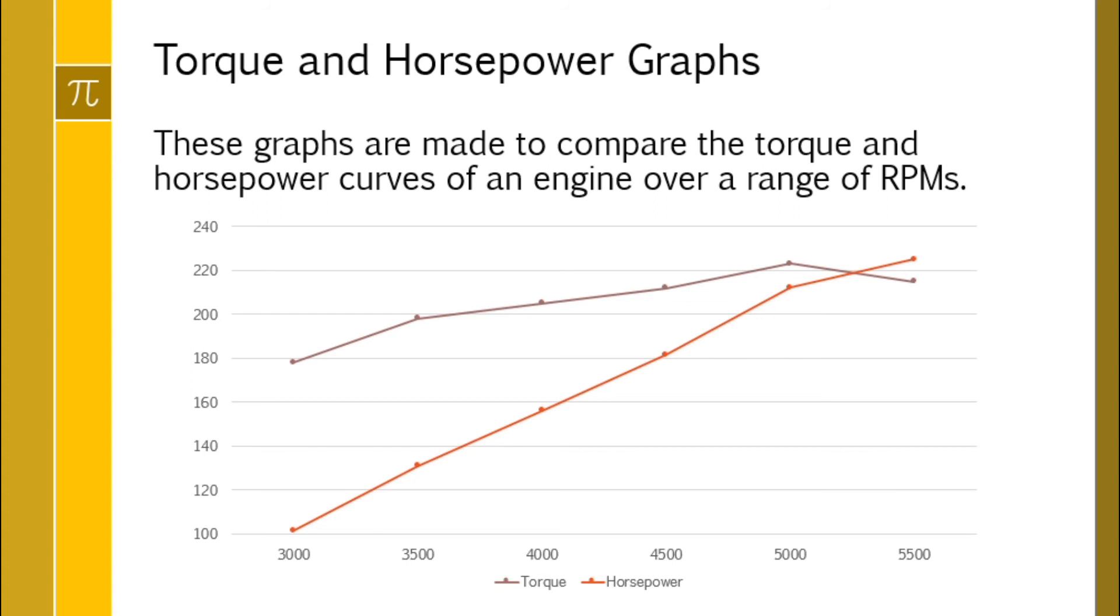I want to know something from these graphs. I've said that horsepower is the red line. So if I wanted to know what the horsepower was at 4500 RPM, I can just wander along to this point, go backwards to look where I am. So it looks like you're about 180 horsepower